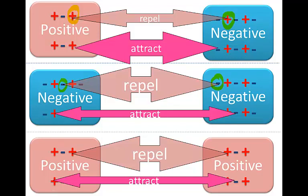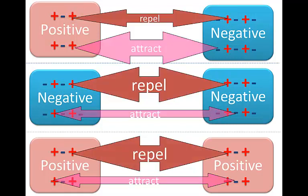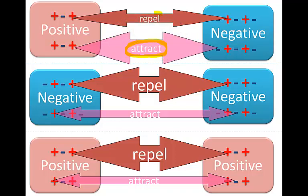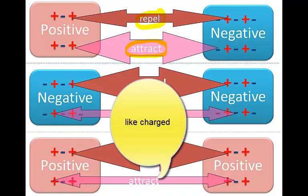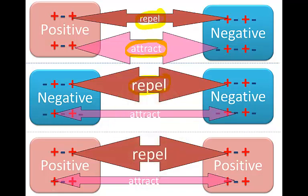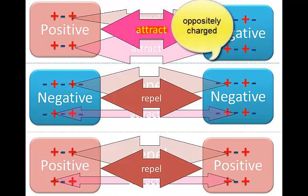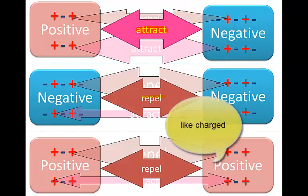But what determines whether the objects overall attract or repel is the relative strength of the attraction and repulsion. So when they are oppositely charged objects, they attract one another more than they repel one another. When they are like charged objects, they repel one another more than they attract one another. And so the overall effect is attraction for the positive and negative objects, the oppositely charged objects, and repulsion for the like charged objects.